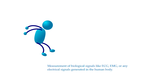So, what is biomedical instrumentation? It's a type of measurement of biological signals such as heart rhythm, muscle vibrations, or any electrical signals generated in the human body — let's say the brain signals, for instance.